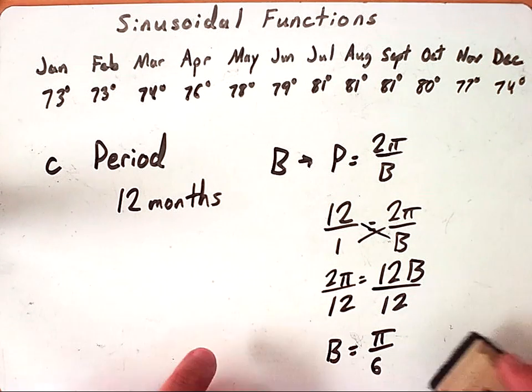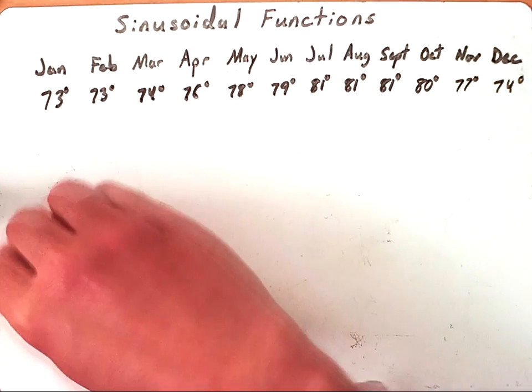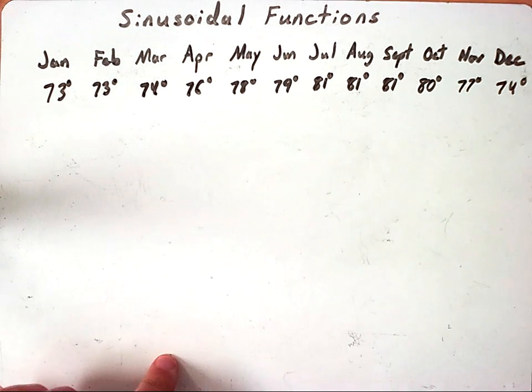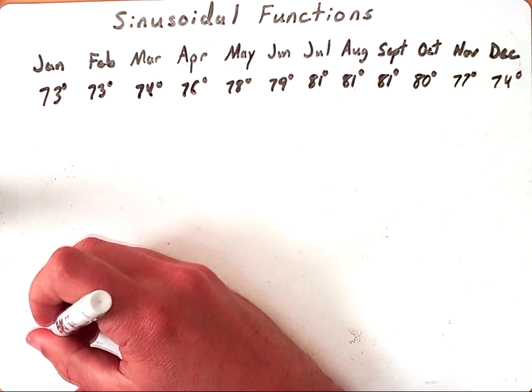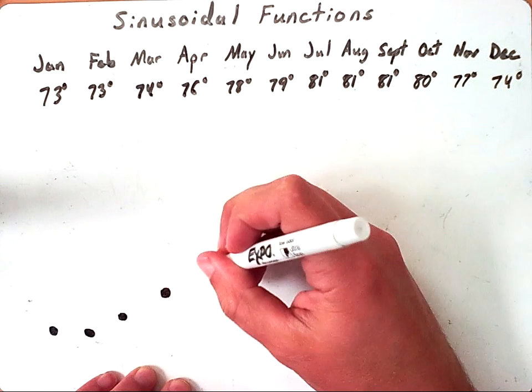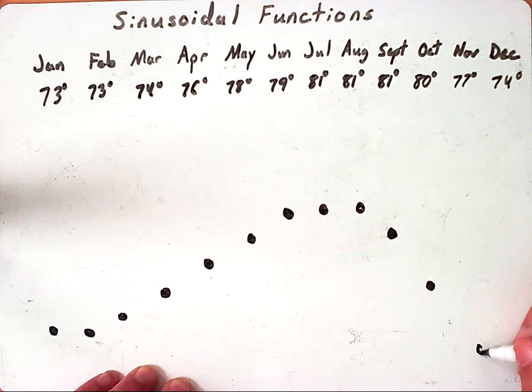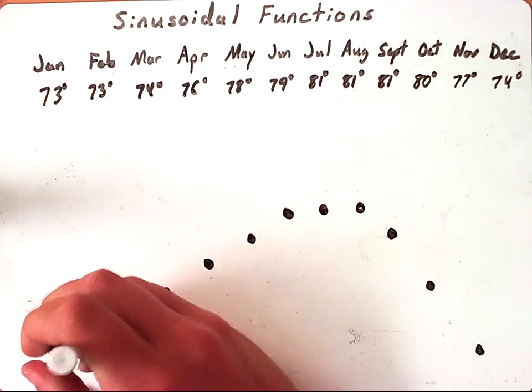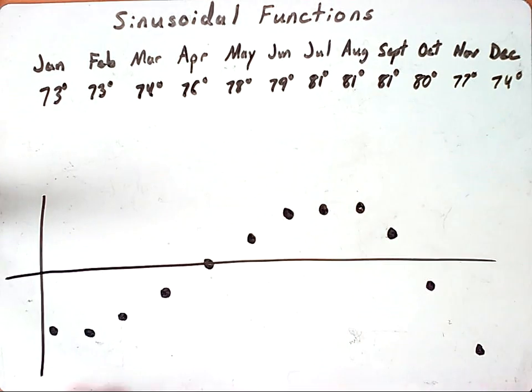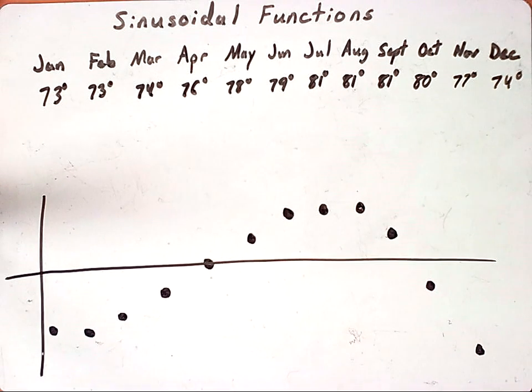So we found the amplitude, we found the period and B, we found the vertical shift. Now we need to know what type of graph it is before we can continue. Is this going to be a sine graph, is this going to be a cosine graph, is it going to be positive, is it going to be negative? If I were to kind of plot these points, our graph would look not unlike a negative cosine graph. We'd have a graph that's starting at a minimum moving up to its maximum and then moving back down to a minimum, so it would make that a negative cosine graph.